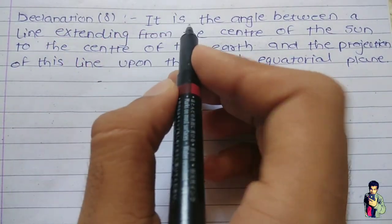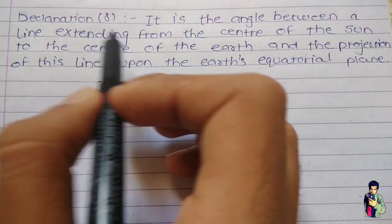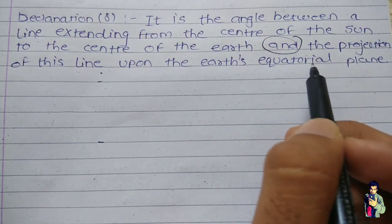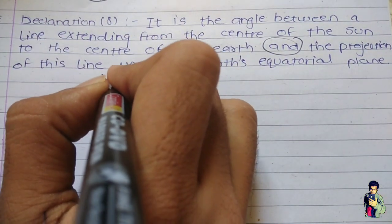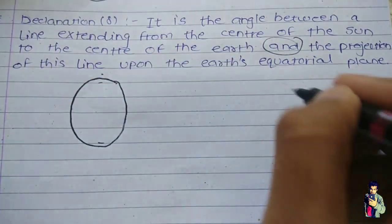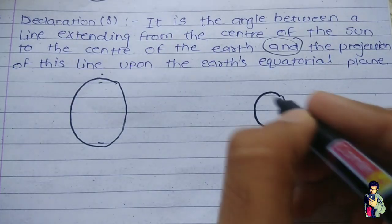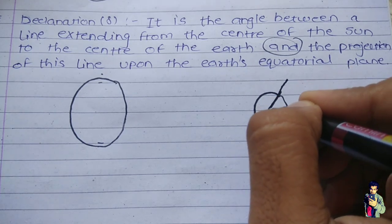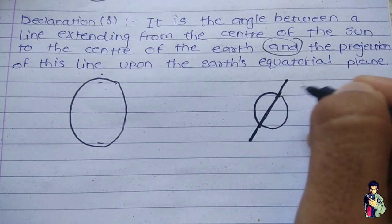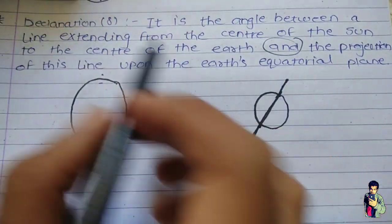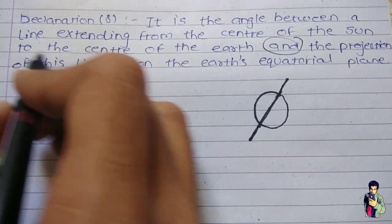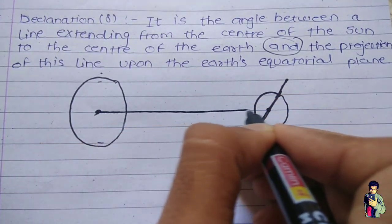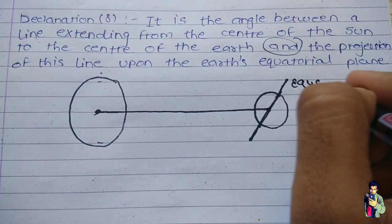What is the declination angle? It is the angle between a line extending from the center of the sun to the center of the earth, and the projection of this line upon the earth's equatorial plane. Let's suppose this is our sun and this is our earth — the equatorial plane exists like this, and extending the equatorial plane behind the earth's periphery gives us the reference.